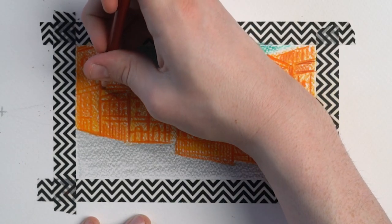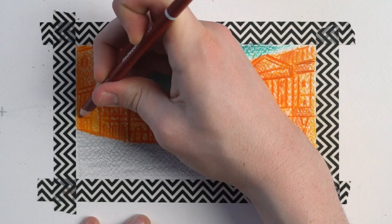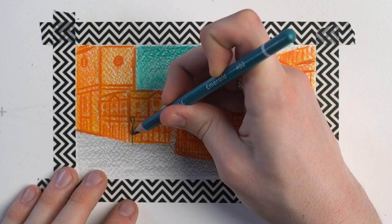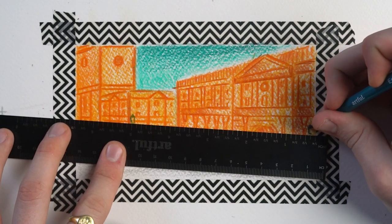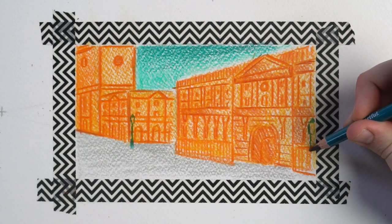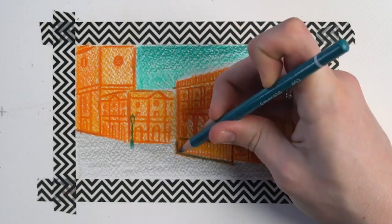I'm adding in the final details of our composition with our emerald pencil, including these old Victorian era lampposts. I really love the colour of the emerald pencil when it's layered on top of our orange and yellow tones. I think it just helps the details in the building stand out better in the composition.